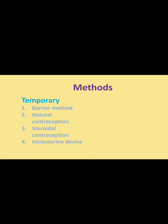The next temporary method is natural contraception. Under natural contraception, we will study different types such as the safe period, the calendar method, breastfeeding amenorrhea, and others.